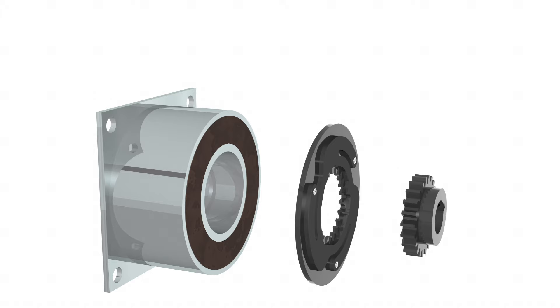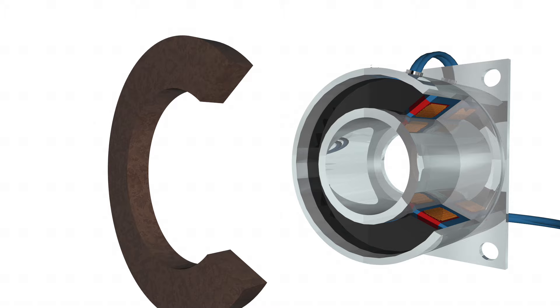The key components of the brake are field coil, armature, and hub.